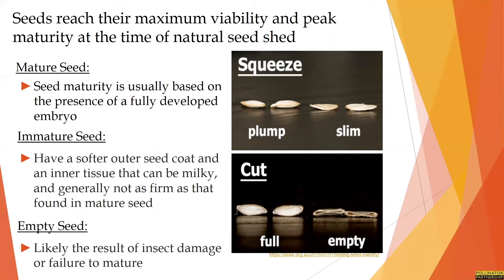A mature seed will usually show a fully developed embryo, the outer seed coat will change color and often darken, and in many cases the seed will be more plump. Even with a flat seed, you can usually see where there is a fully developed embryo versus one that hasn't. An immature seed, on the other hand, will often be a lighter, greener or yellower color, have a softer outer seed coat, and the inner tissue can tend to be milky and not as firm. An empty seed is likely the result of insect damage or failure to fully mature or become pollinated, and these tend to be slim or empty when you cut them open.